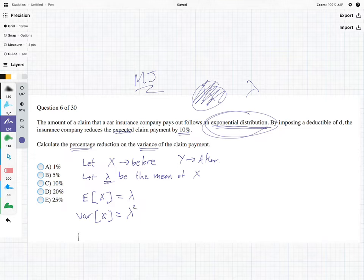Which means the expected value of X squared is going to be equal to the variance of X plus E of X squared, which is equal to 2 Lambda squared.